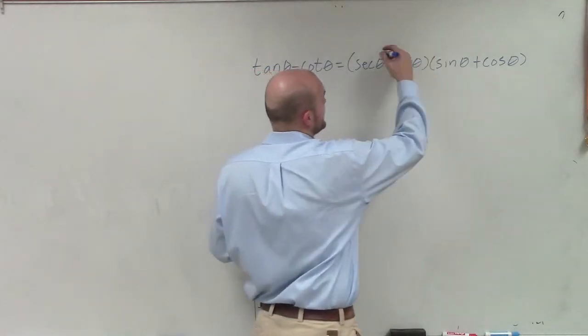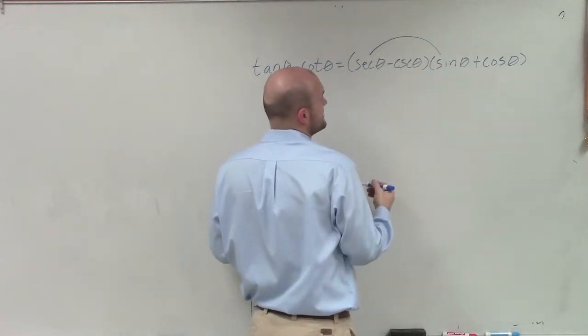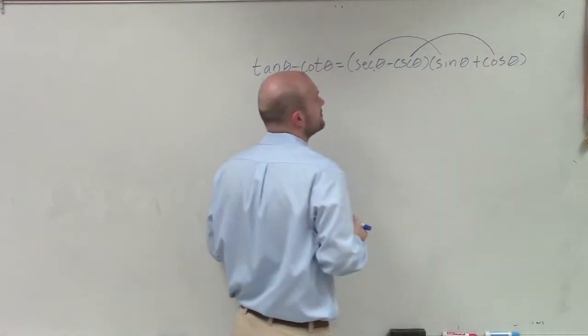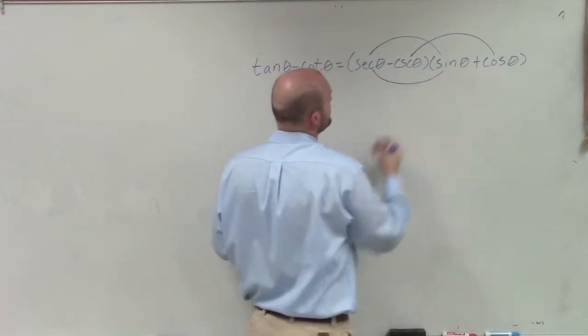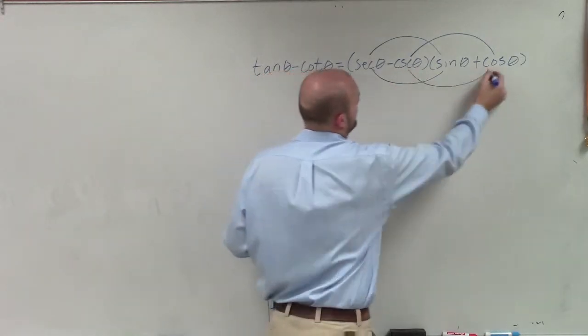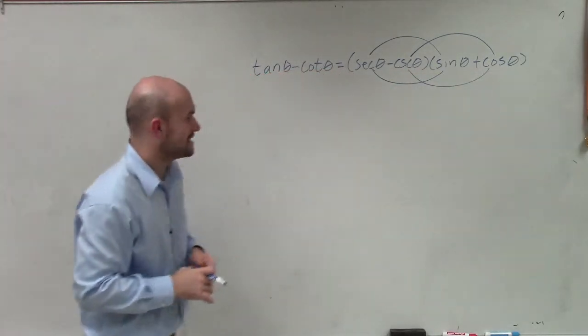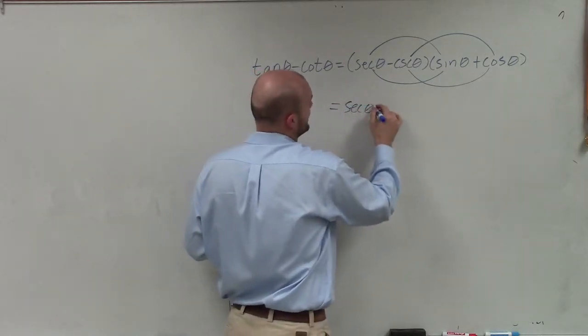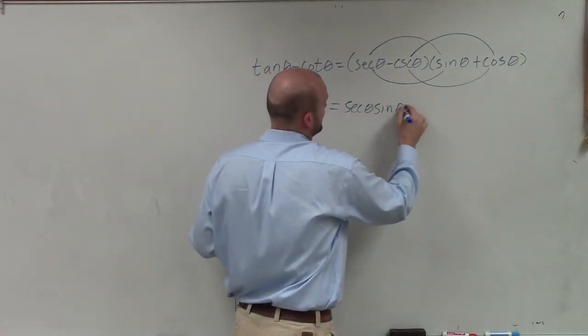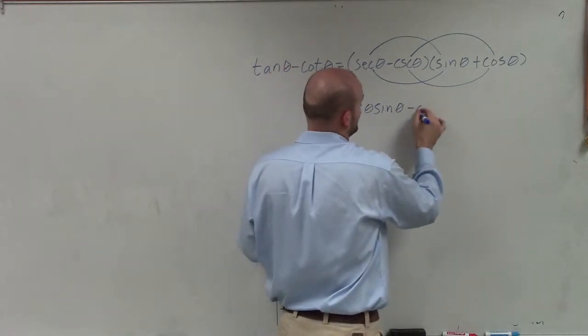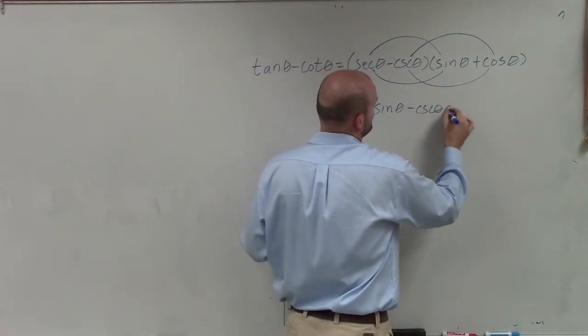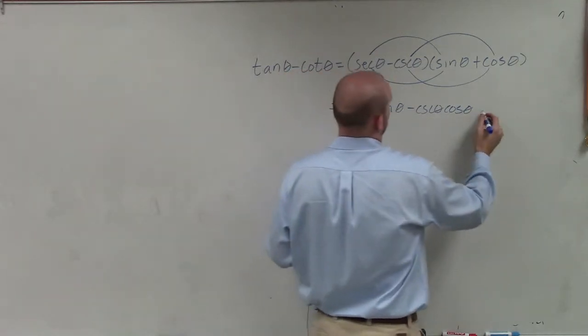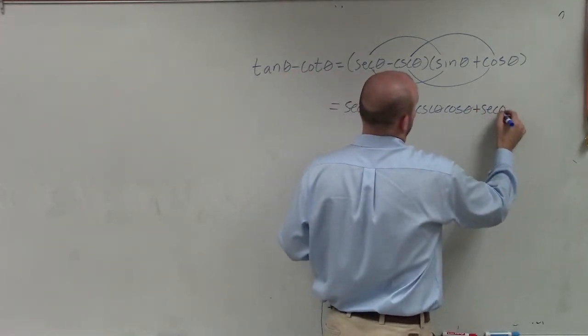I don't know, we'll see if anything comes out of it. So I'll multiply secant of theta times sine, and then I'll do cosecant times cosine. Then I'll do secant times sine, and then cosecant times cosine. So when we go ahead and simplify this, I have secant of theta times sine of theta, negative cosecant of theta times cosine of theta.